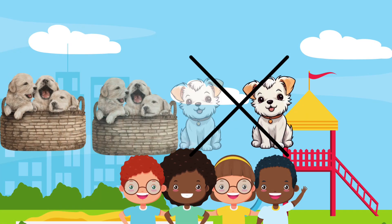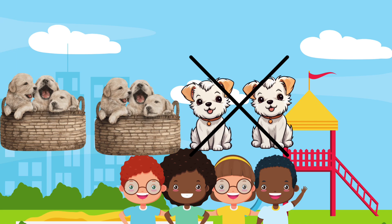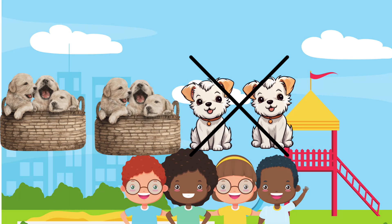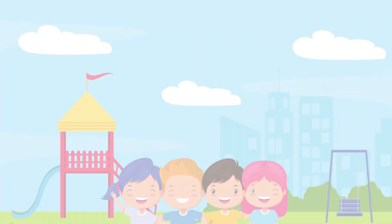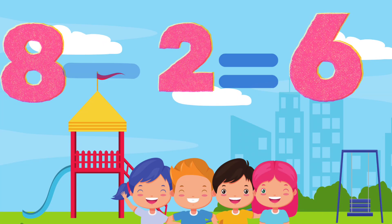You have 8 puppies. You give 2 puppies to your best friends. Now you have 6 puppies. 8 minus 2 is equal 6.